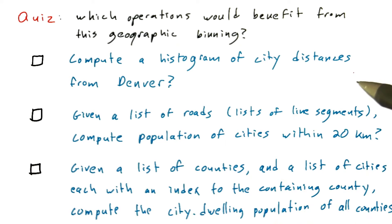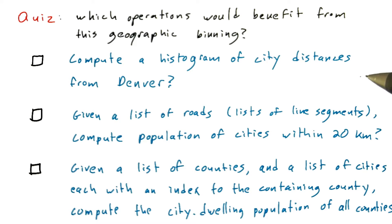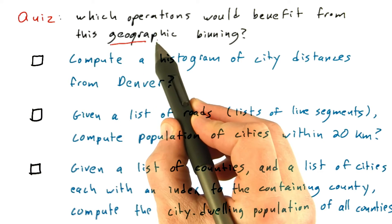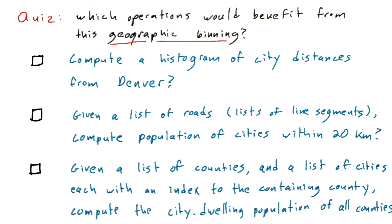To compute a histogram of city distances from Denver, for every city you would compute its distance from Denver and then build a histogram using techniques you've already studied. A histogram is essentially a binning operation — in this case, binning on distance, the one-dimensional quantity of distance. Although you would use a binning step in creating that histogram, it really wouldn't be using the geographic binning we discussed — the two-dimensional geographic binning used to accelerate computation of which cities were within 300 kilometers of each other.